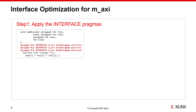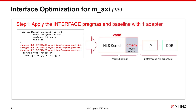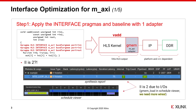First, let's apply the interface pragmas. They are not required since pointers automatically map to AXI master in the Vitis flow, but it's good design practice to apply them. After running C synthesis, we will notice that all the pointers are attached to the same HLS adapter, which creates a bottleneck as there aren't enough wires to read our two inputs simultaneously while also generating the output result.